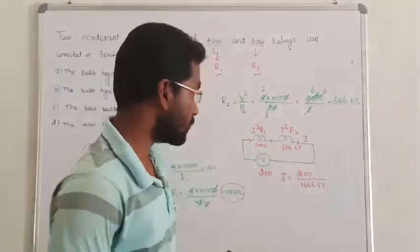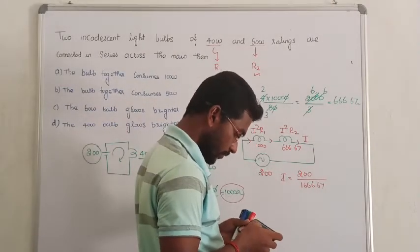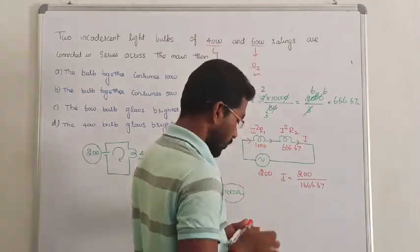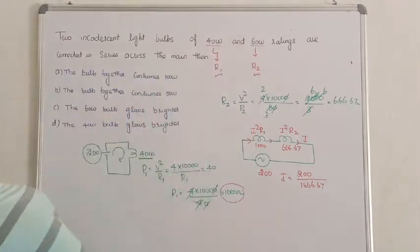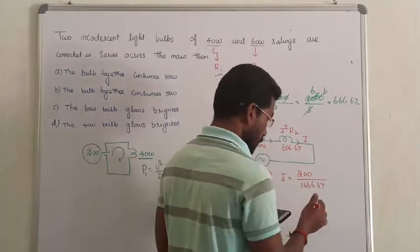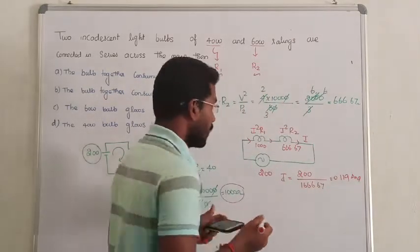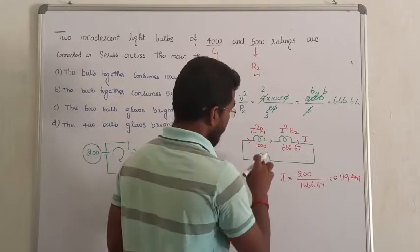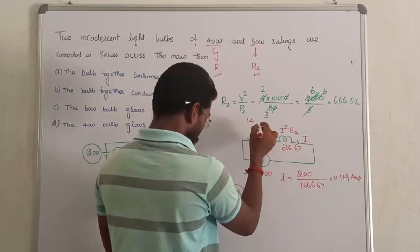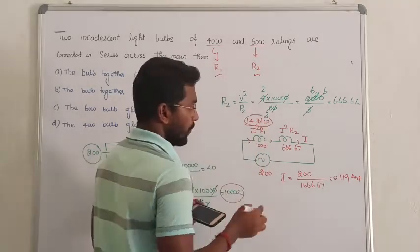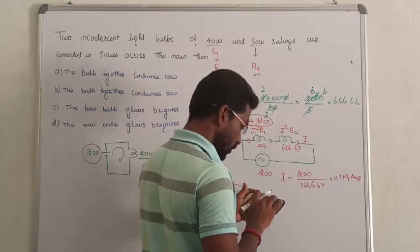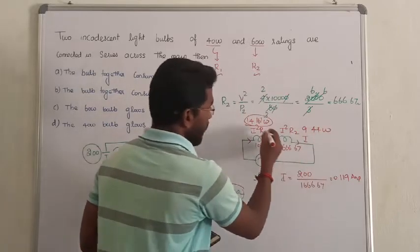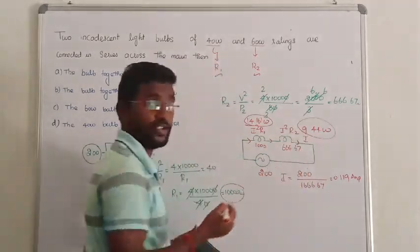I am getting 0.119 amperes — that is the current through this circuit. Now, first bulb power: P1 equals I squared into R1 = 0.119 squared into 1,000, which gives 14.161 watts. Second bulb: P2 equals I squared into R2 = 0.119 squared into 666.67, which gives 9.44 watts. Now see the difference — the first bulb is consuming 14.161 watts, while the second bulb is consuming 9.44 watts.